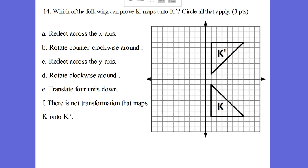So for what we're doing right here, we're going to start on this one. Which of the following can prove k maps onto k prime — circle all that apply. So k to k prime — how do I get that in a reflection? Excellent! Reflection across the x-axis. There's one right here.